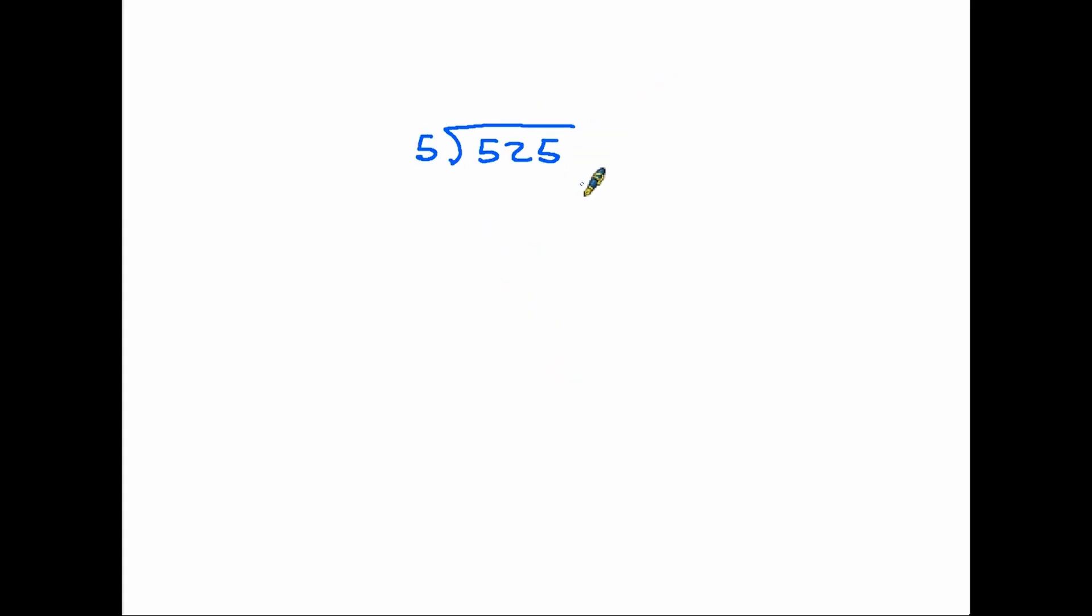A third example and I'm going through this one simply because it's a little bit different. We are dividing 525 by five. So the first thing we do let's go to the hundreds. How many fives in five? One. And in fact one five is exactly five. So when we take that away we end up with zero.